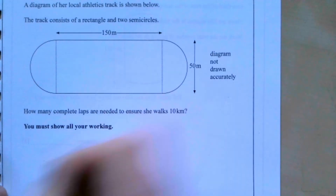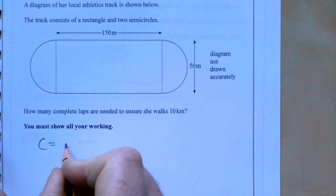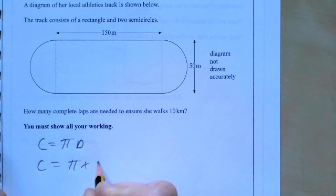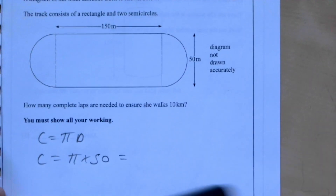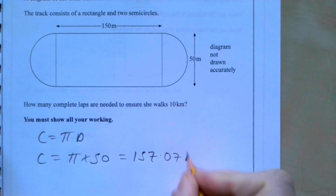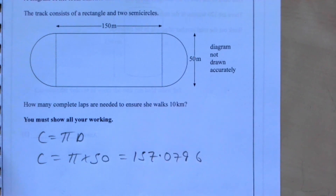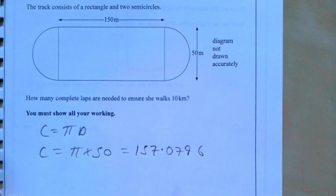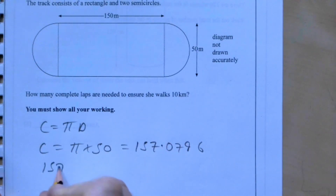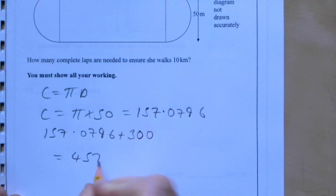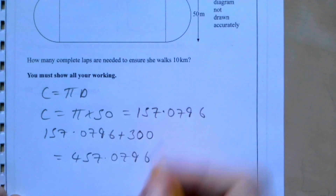The circumference of the full circle is pi times the diameter of 50, giving 157.0796 metres. Adding the two straight sections of 150 each gives 157.0796 plus 300, which equals 457.0796 metres as the total track distance.